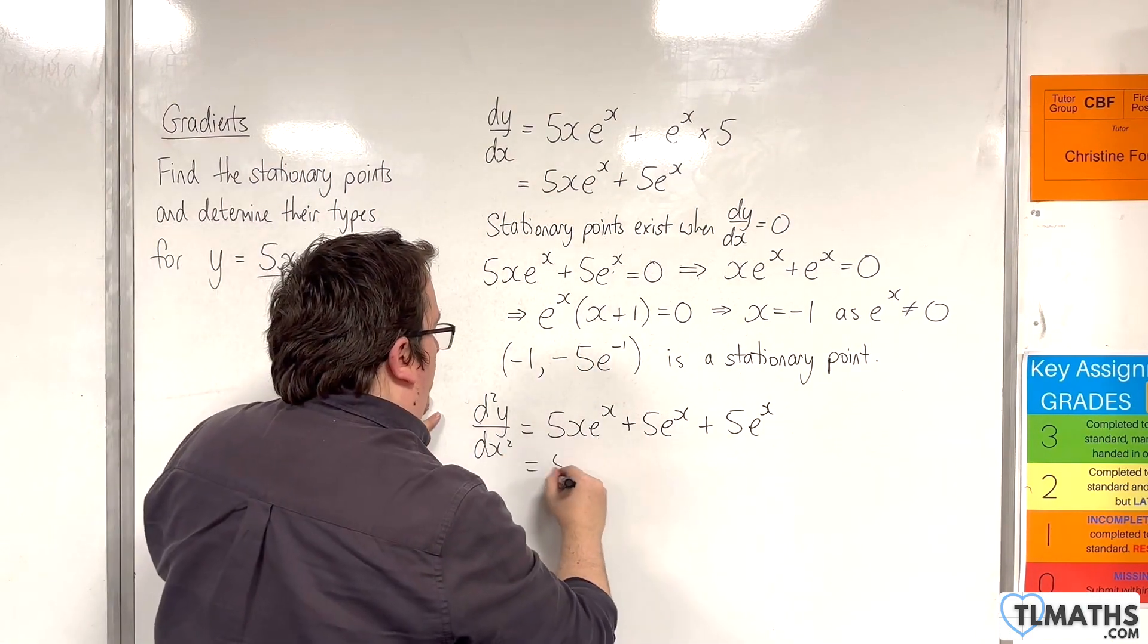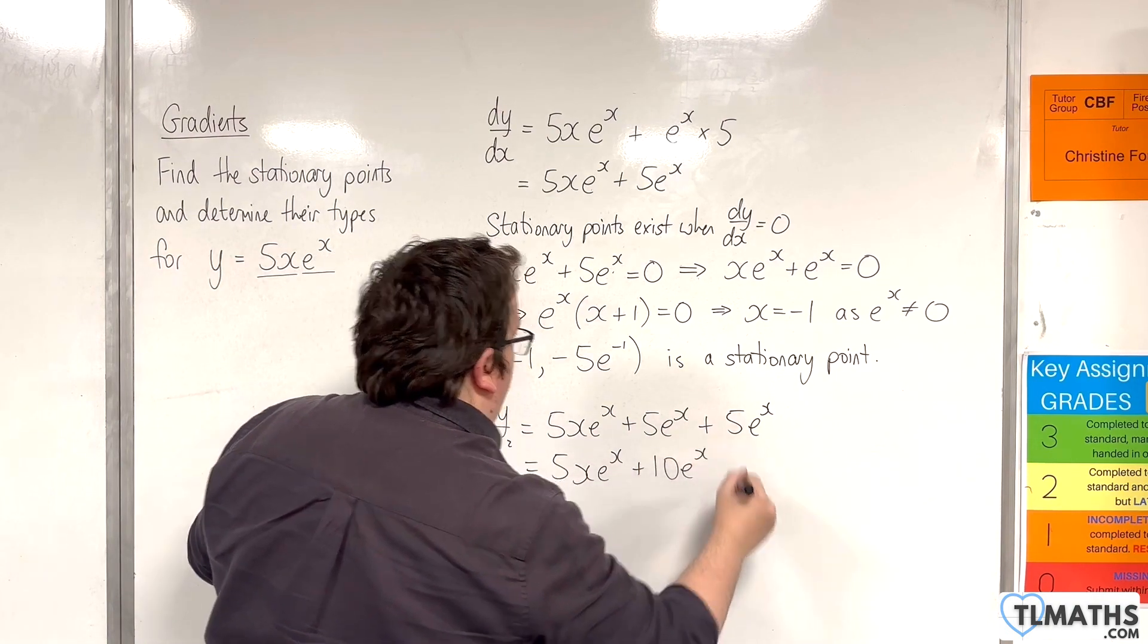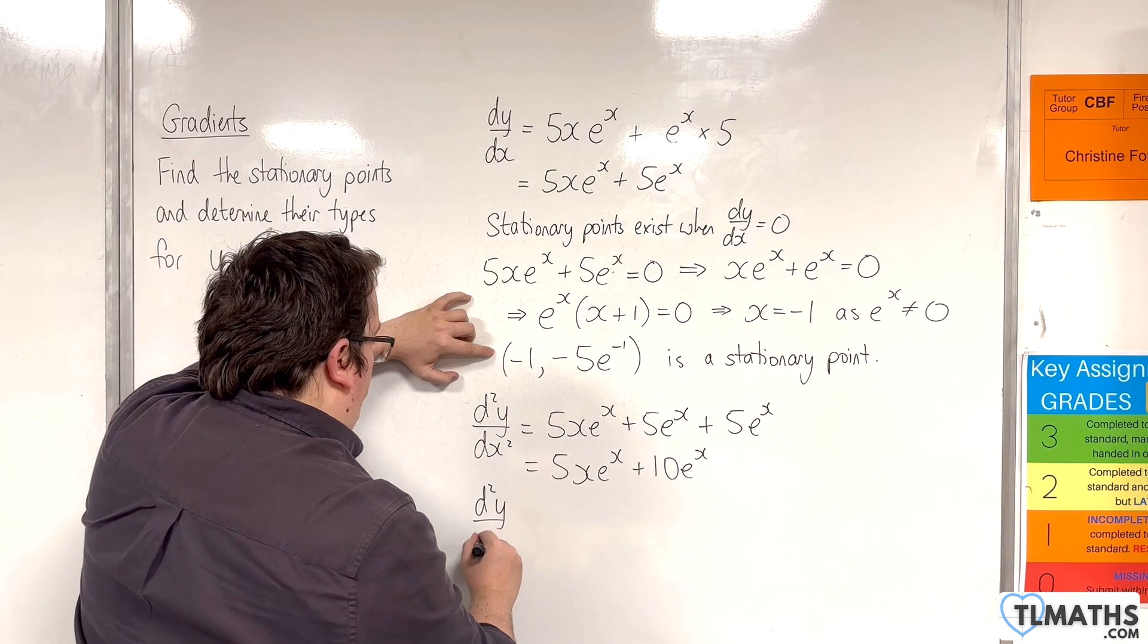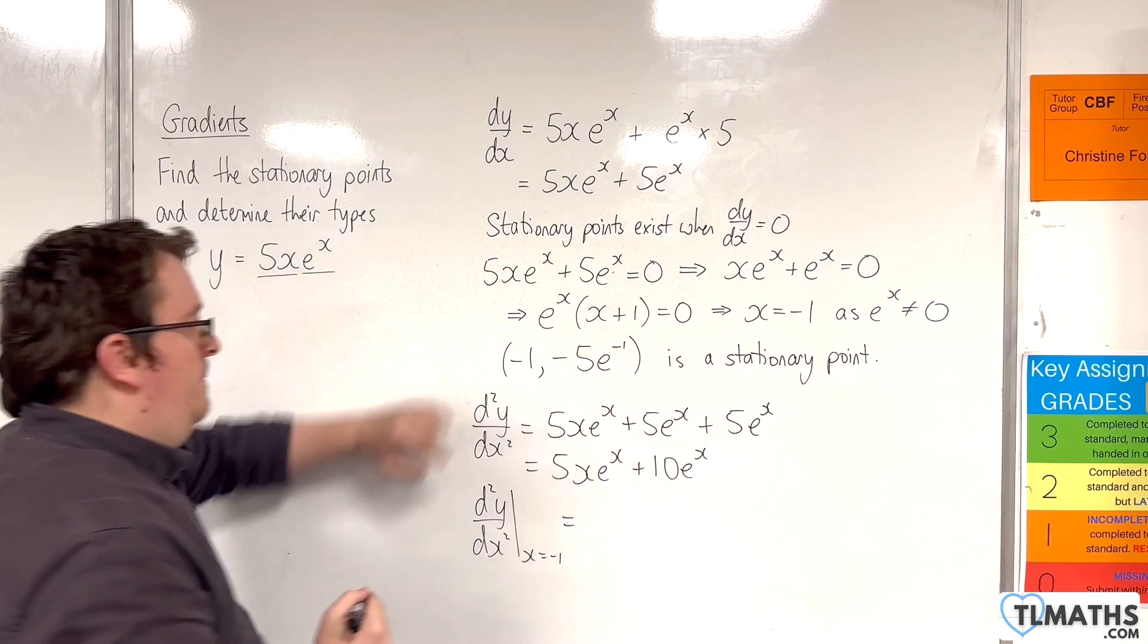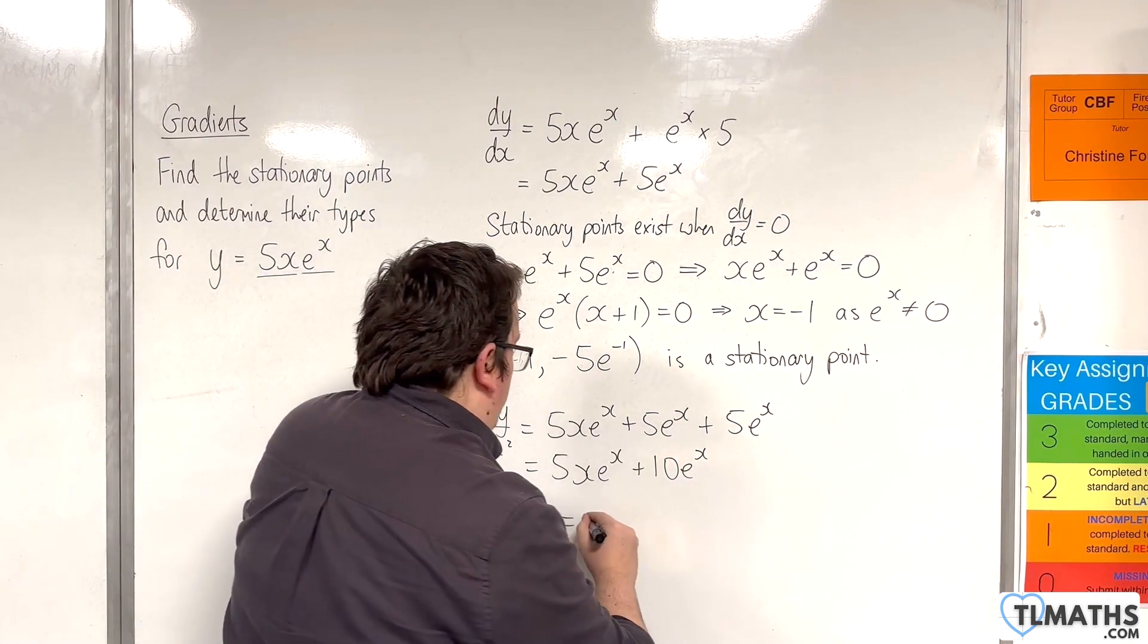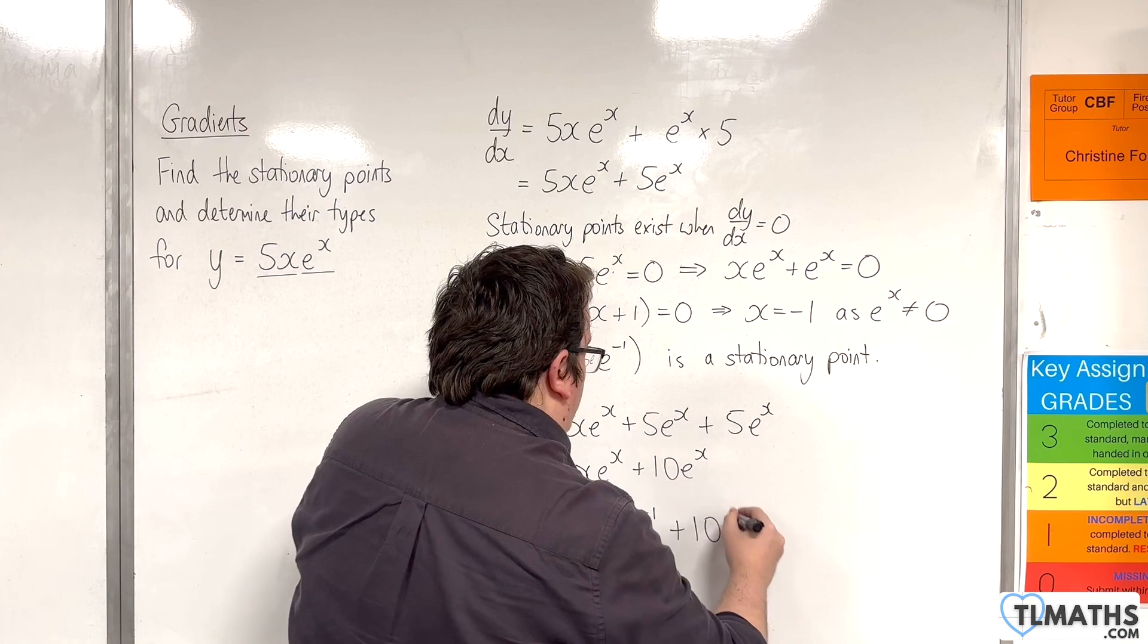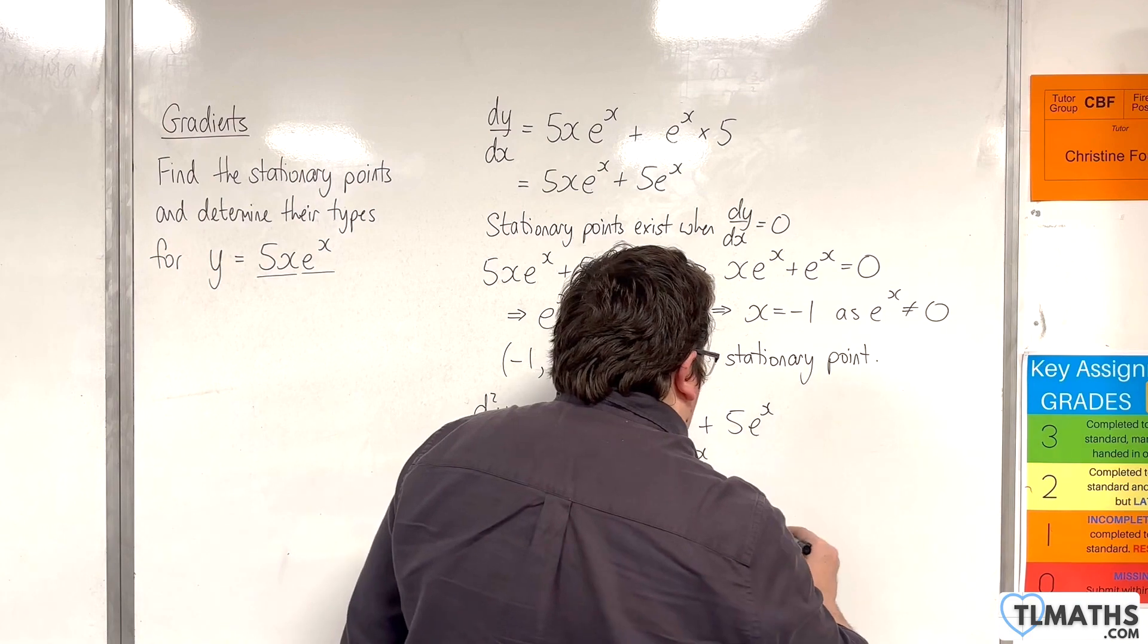This is 5x e to the x plus 10 e to the x. I need to substitute in the x equals minus 1. We're going to get minus 5 e to the minus 1, and then plus 10 e to the minus 1. And so that would be 5 e to the minus 1.